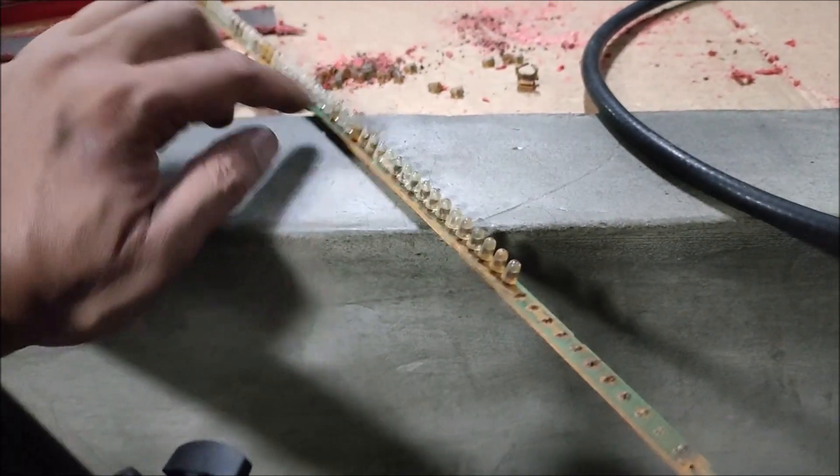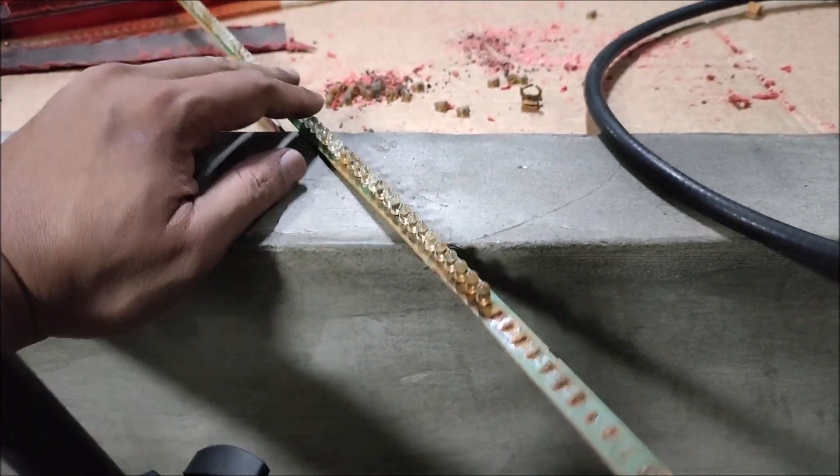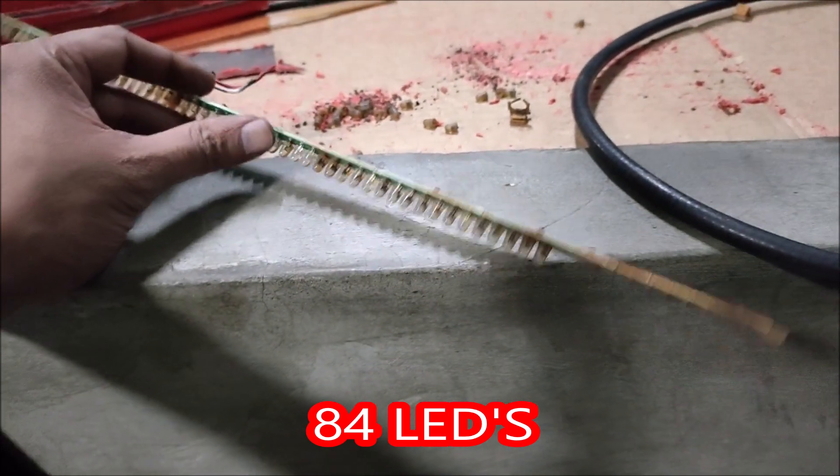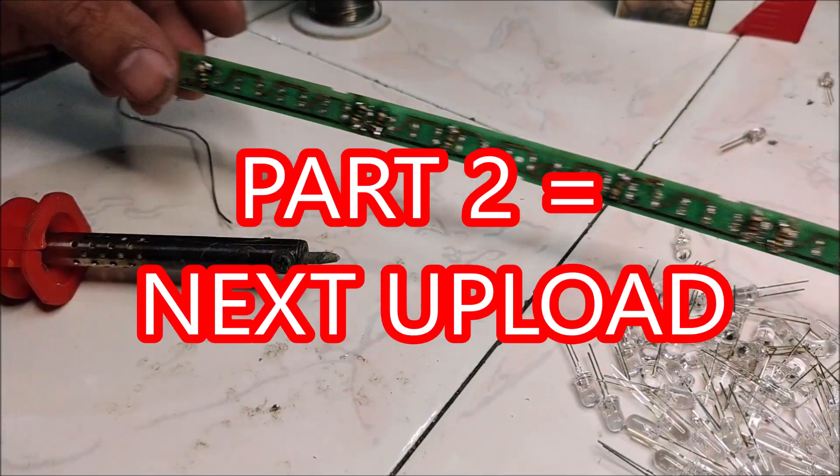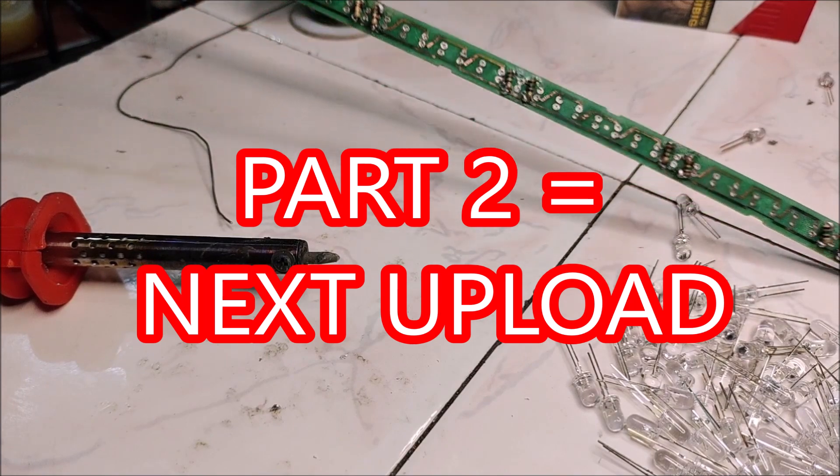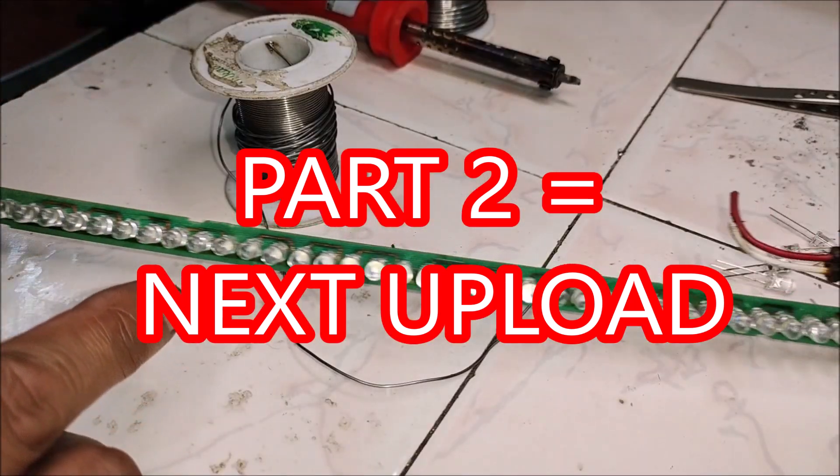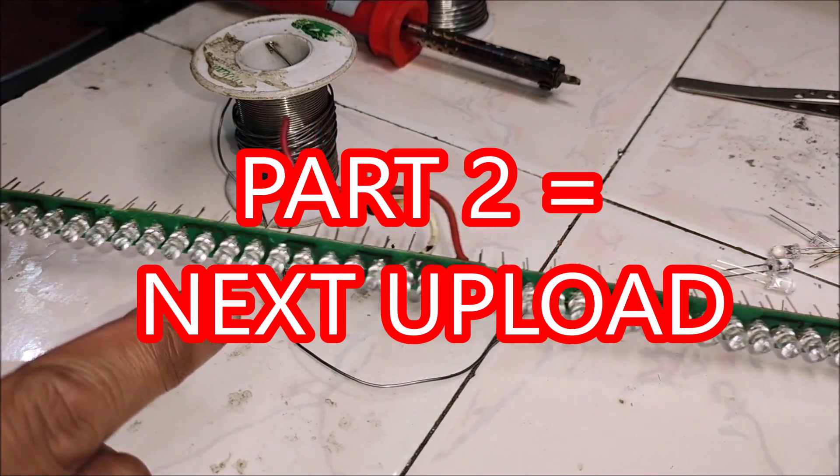So I've counted the leads here. There are a total of 84 leads that we need to replace. So okay na lahat ng resistors sa likod. Makabit na natin ito mga LED naman. So there you go. I installed and aligned all the LEDs.